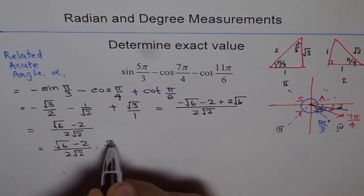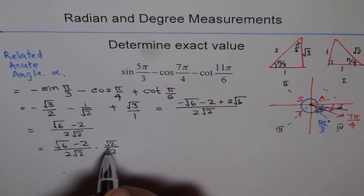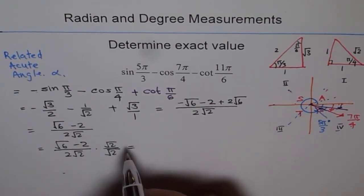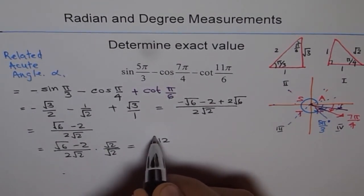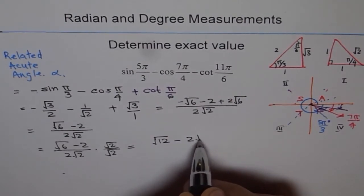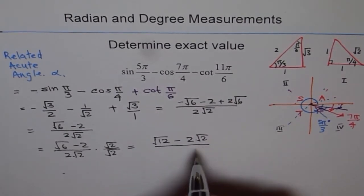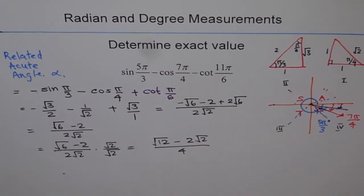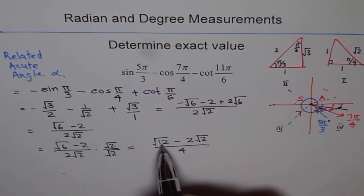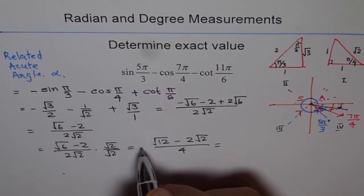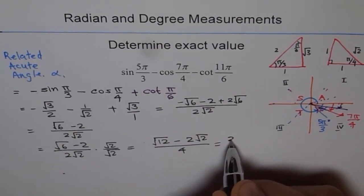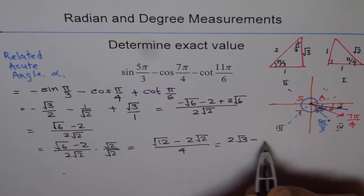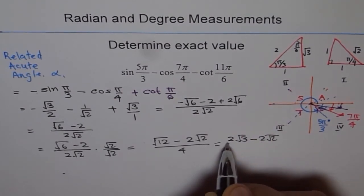So we will multiply and divide by square root 2, which will give us square root of 12 minus 2 square root 2 divided by 4. So it could be written like this, 12 can be written as 4 times 3, where 2 comes out. So 2 square root 3 minus 2 square root 2 over 4.